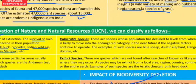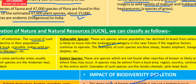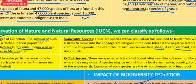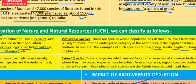Vulnerable species are those whose population has declined to a level from which they are likely to move into the endangered category in the near future. Examples include blue sheep, the Asiatic elephant, and the Gangetic dolphin.